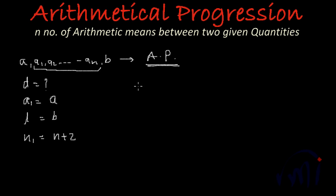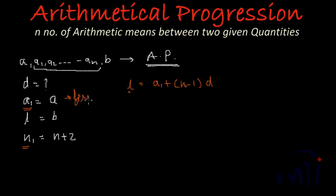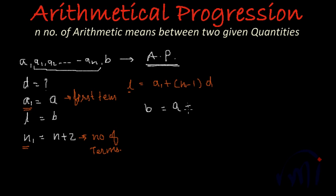Then we have a formula for the last term: l equals a plus (n minus 1) multiplied by d. Since we have represented the first term as a1 and the number of terms as n1, we write it in the same notations. So in order to find the value of d, we substitute the value of l as b, a1 as a, and n1 as n plus 2.